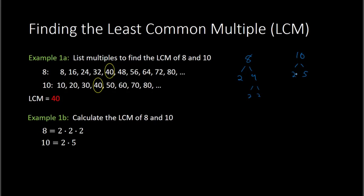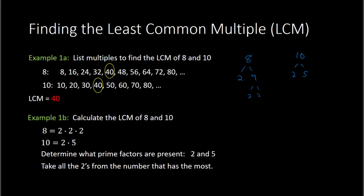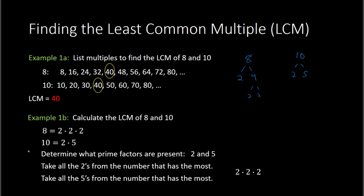Now that we've prime factorized both numbers, we see what factors do we have present — we have 2s and 5s. To find the least common multiple, I take all the 2s from the number that has the most. Looking at the 2s, 8 has the most with 3 of them, so I take all of those 2s from the 8. Then we do the same thing with the other factor, which was 5. We take all the 5s from the one that has the most — the only one with 5s is 10, with one of them. So we take that 5 as well. Multiply those numbers together and we find our LCM to be 40. Notice that is the correct answer, because that is the same thing we got when we listed them out.